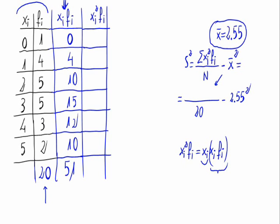So we have 0 times 0 is 0. For the second value, 1 times 4 is 4. 2 times 10 is 20. 3 times 15 is 45. 4 times 12 is 48. 5 times 10 is 50. All these elements have to be added and the result is 167.